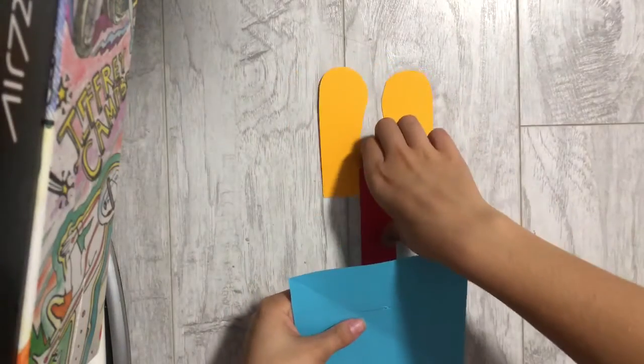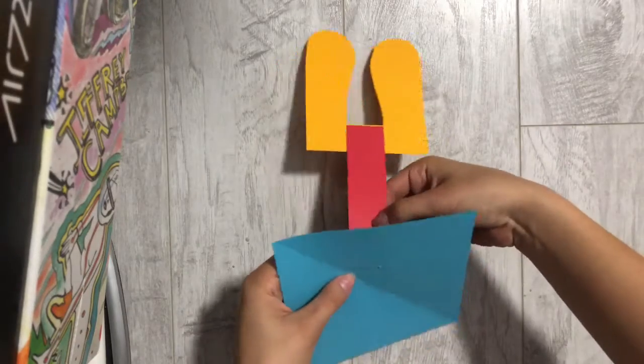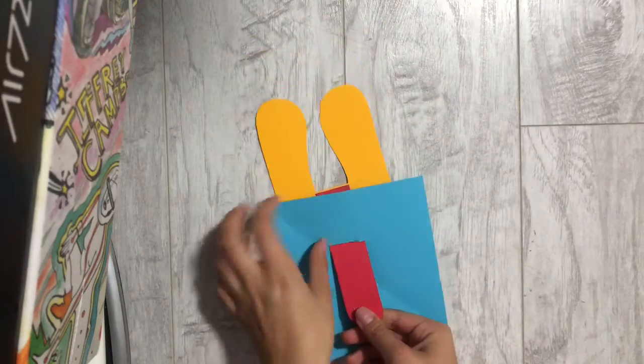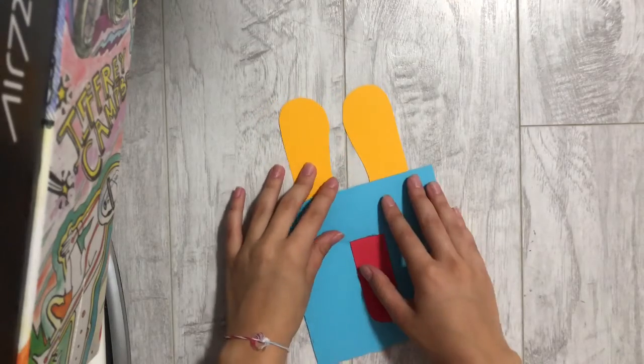Next we are going to take our blue piece of paper and stick our tongue through a little slit that we created and just leave it as it is.